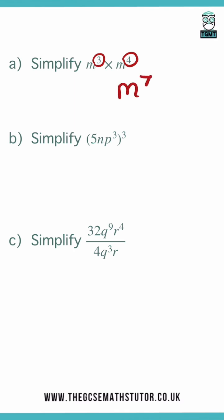When we've got brackets, all of them need to be done to the power of 3, so that's 5 to the power of 3, n to the power of 3, and that's going to be p to the power of 9, as we multiply those powers.